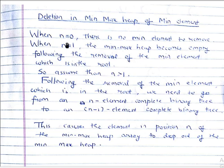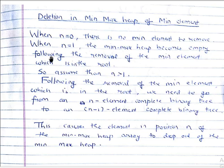So when n is equal to zero, there is no min element to remove. When n is equal to one, the min-max heap becomes empty following the removal of the min element, which is in the root. So assume that n is greater than one.